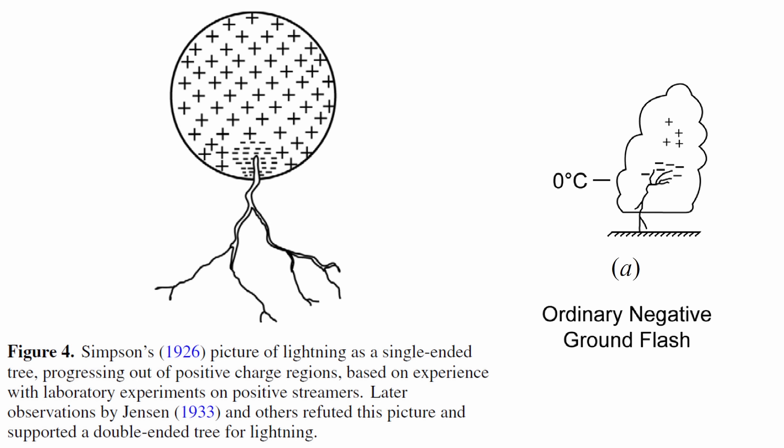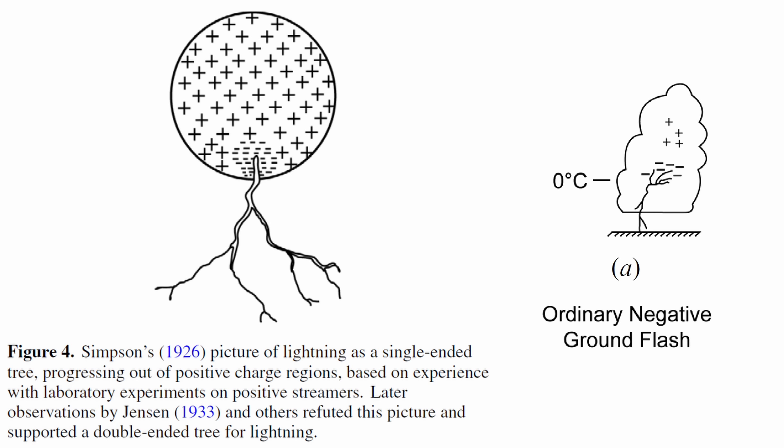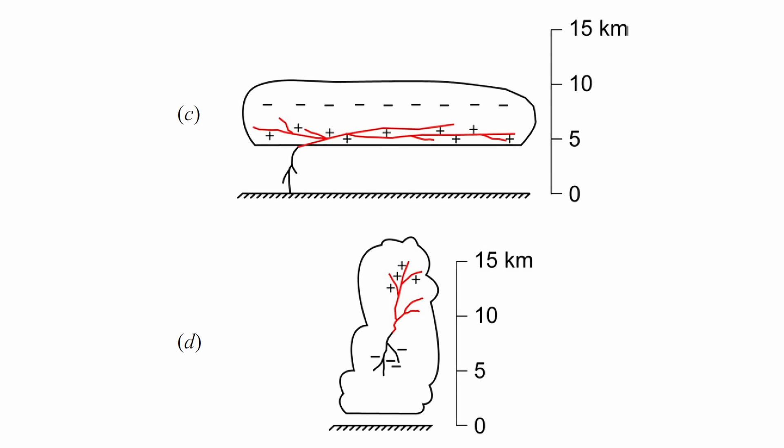Thunderstorm observations in the 1930s however shattered this notion, revealing that downward branching lightning predominantly emerges from the lower negative charge of thunderclouds. Here positive and negative charges disperse across distances ranging from hundreds of meters to kilometers, but are initiated not at an electrode but right in the midst of the cloud.